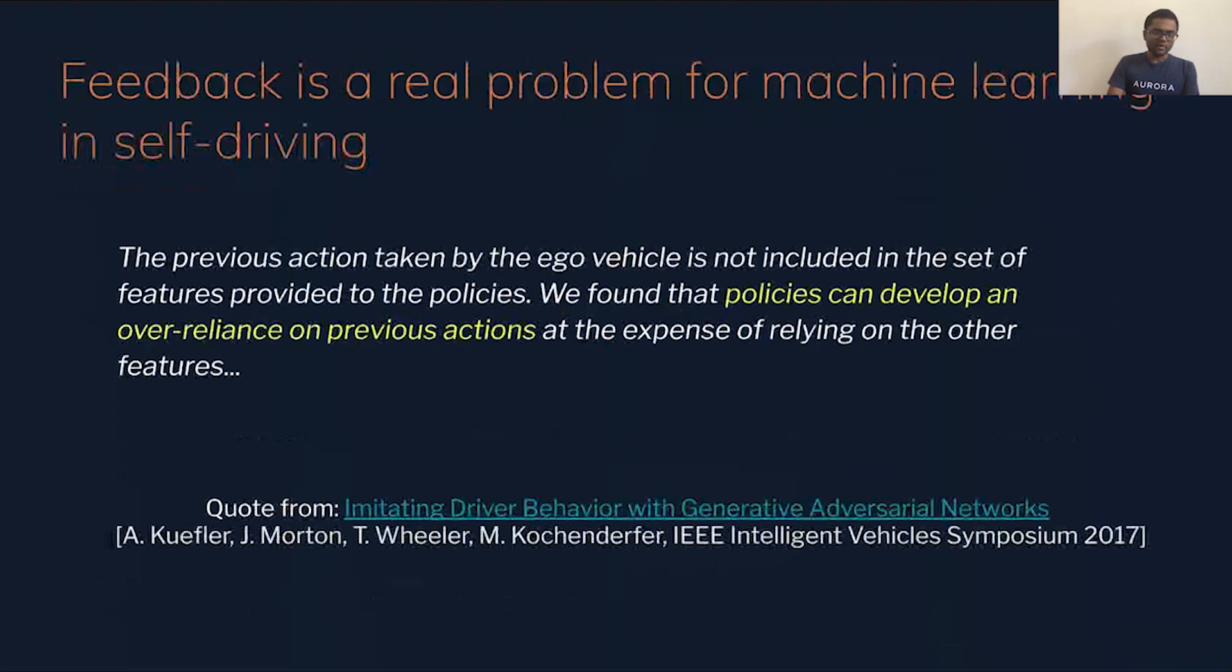And this shows up in a couple of different ways. For example, in this paper, Imitating Driving Behavior with GANs, they found that the policies can develop an over-reliance on previous actions, and their approach was just to not include them in the dataset. This has been one approach that we've seen in the literature.